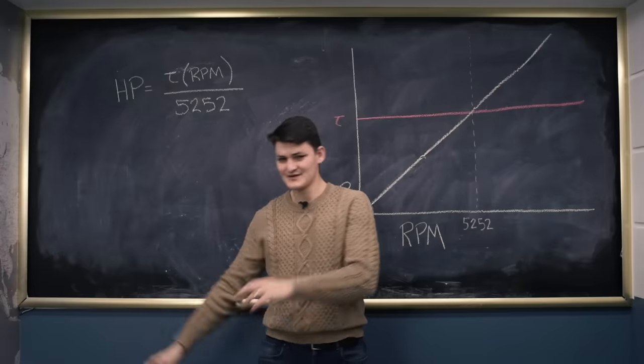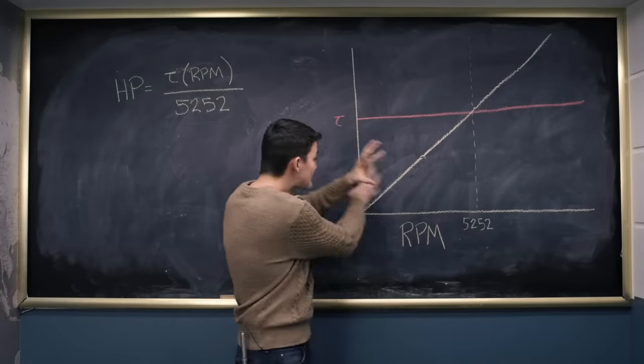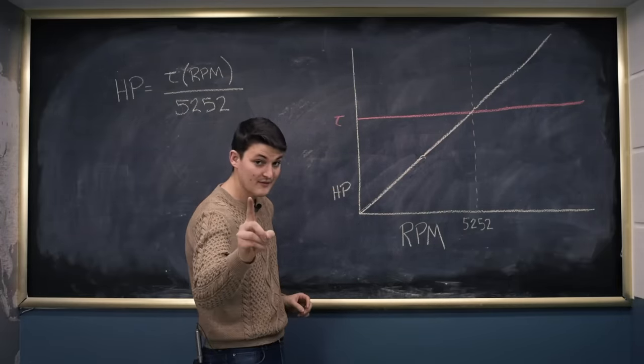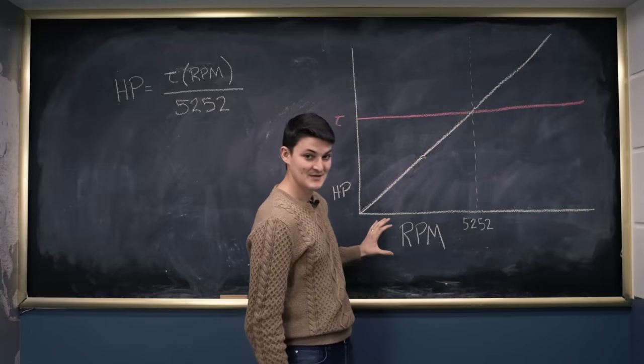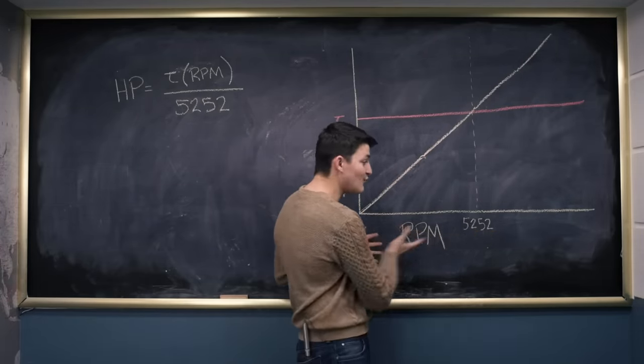So resist the cruiser versus sport bike, torque versus horsepower marketing bullshit. Both are playing the exact same game, and both are tied to this RPM range. And that's what we control with our clutch and gearbox. And that's what we really want to know.